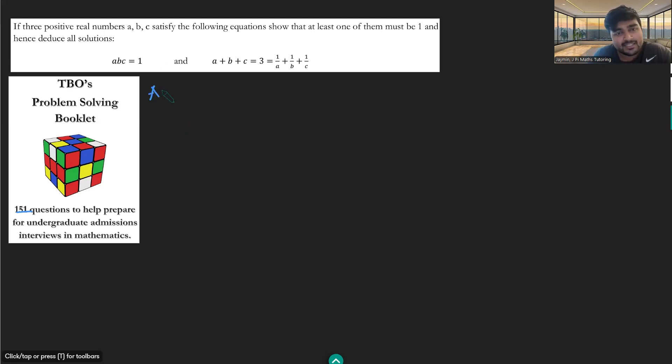The first way is a way that maybe is screaming out to you if you've done a lot of competition maths before, and that's to use the AM-GM inequality. This just says that the arithmetic mean of a set of positive numbers is always going to be bigger than or equal to the geometric mean of the same set of positive numbers.